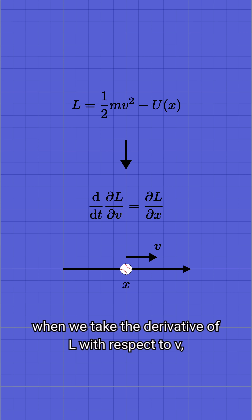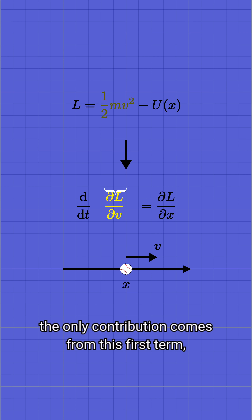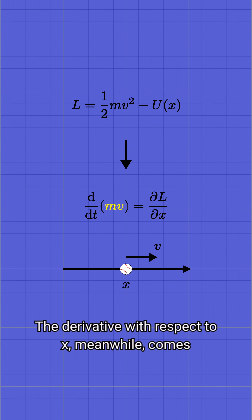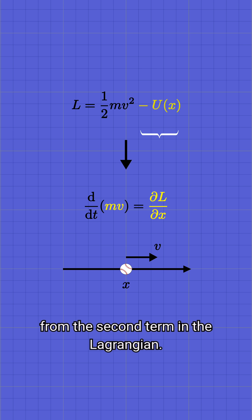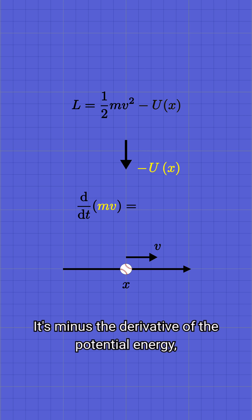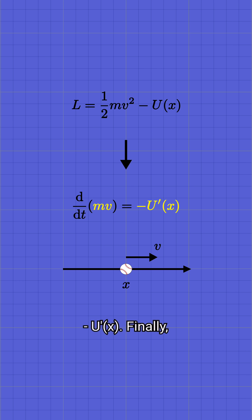And so, when we take the derivative of L with respect to v, the only contribution comes from this first term, which gives us m times v. The derivative with respect to x, meanwhile, comes from the second term in the Lagrangian. It's minus the derivative of the potential energy, u-prime.